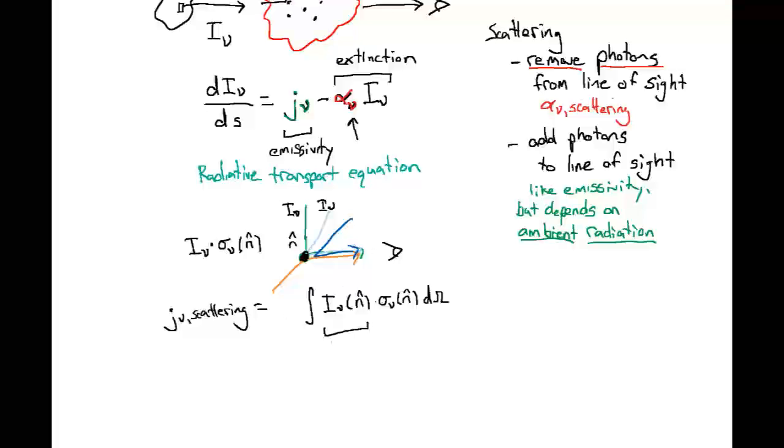But we need to get our units right here. So we have a specific intensity here, which had units of ergs per second per hertz per centimeter squared per solid angle. We multiplied it by something that has units of centimeters squared, and we integrate it over a solid angle, omega.